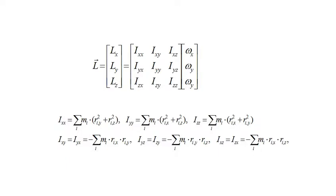The angular momentum of a rigid body equals the moment of inertia matrix times the angular rate vector. I sub xx is the moment of inertia about the x-axis. I sub yy is the moment of inertia about the y-axis. The off-diagonal terms in the moment of inertia matrix are called products of inertia. The matrix is symmetric with i sub xy equal to i sub yx, i sub yz equal to i sub zy, and i sub xz equal to i sub zx. The moment of inertia matrix maps angular rate vectors to angular momentum vectors, and hence it's a tensor, but that's incidental to our purposes now.